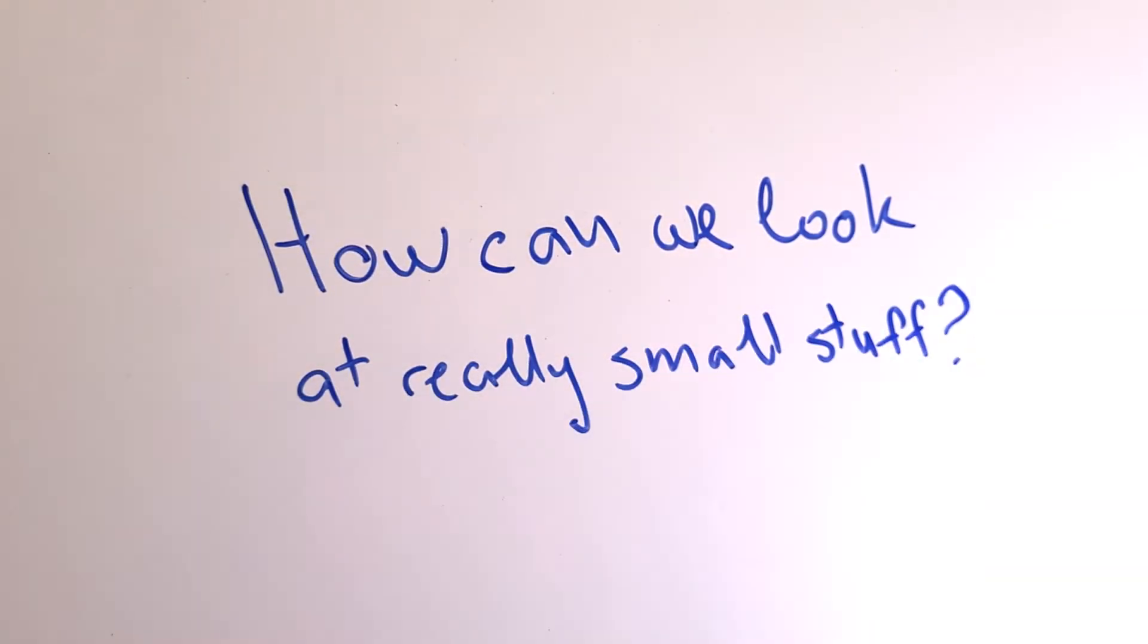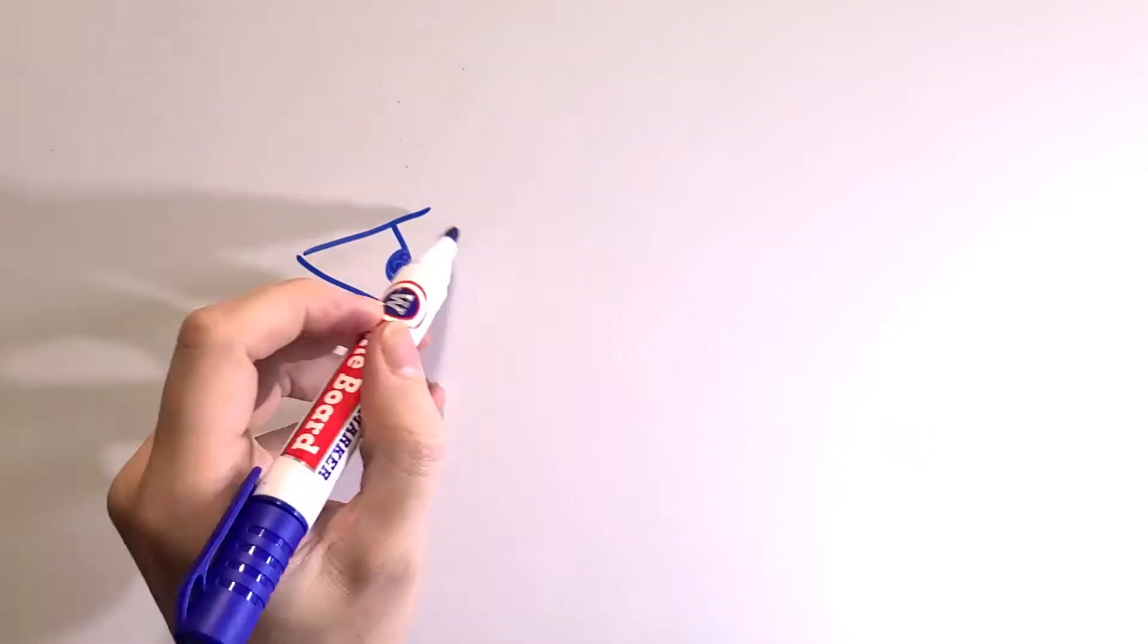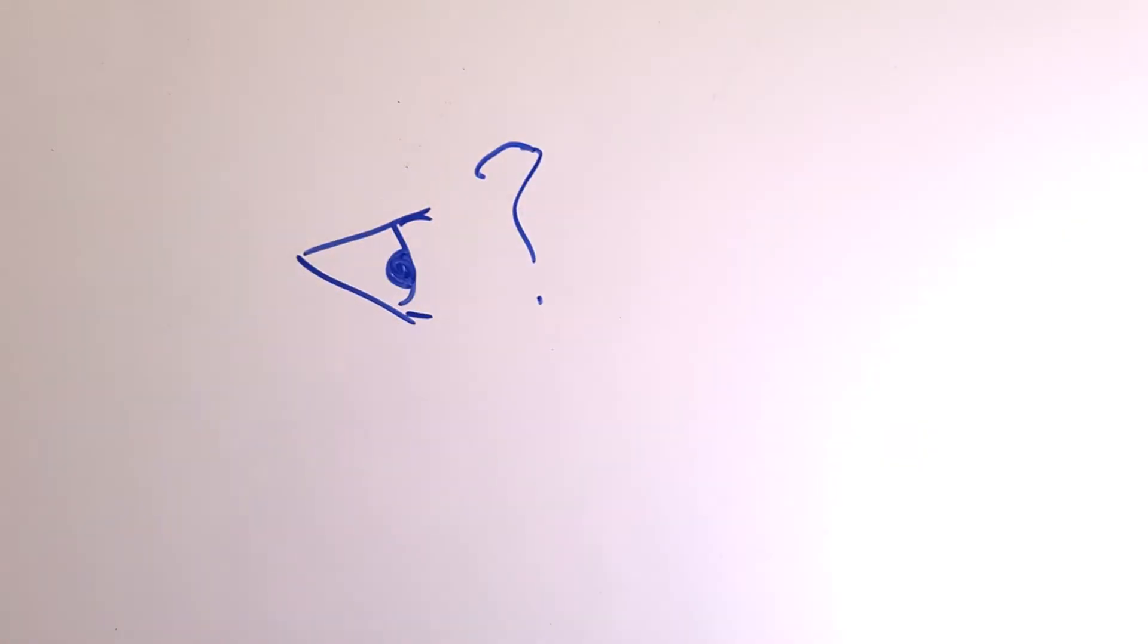How can we look at really small stuff, so small that you can't see it with your naked eye?